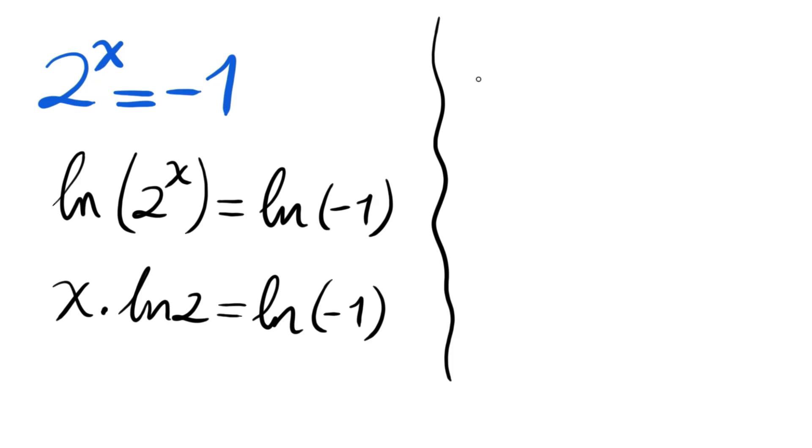Now this negative 1 is e to the power of iπ principally. Since we have real and imaginary axes on the complex plane, and negative 1 stands here in the negative part of the real axis...